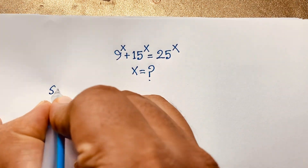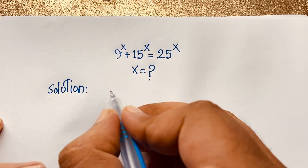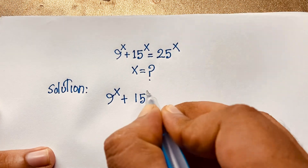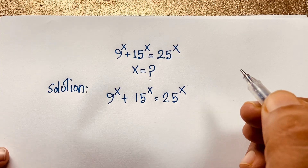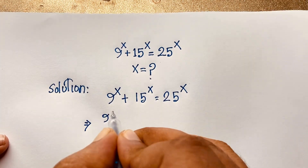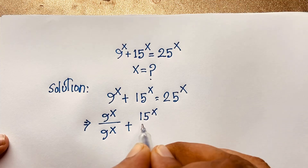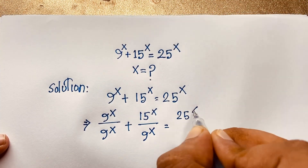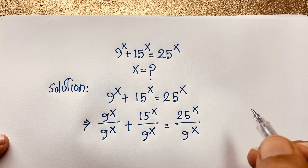Our question is 9^x + 15^x = 25^x. This is our question. Now I divide both sides by 9^x, so we get 9^x/9^x + 15^x/9^x = 25^x/9^x. I divide both sides by 9^x.